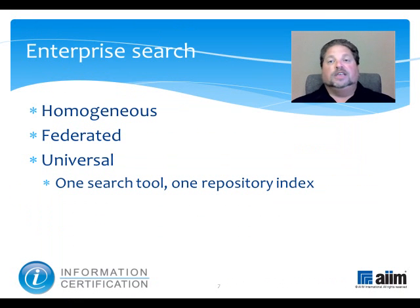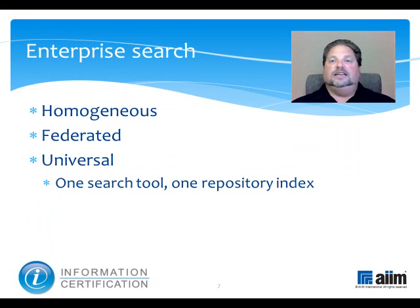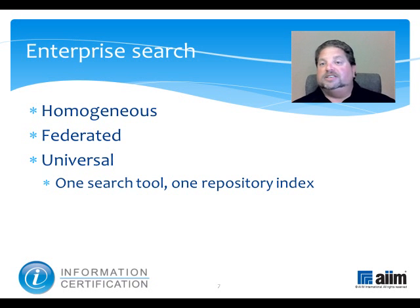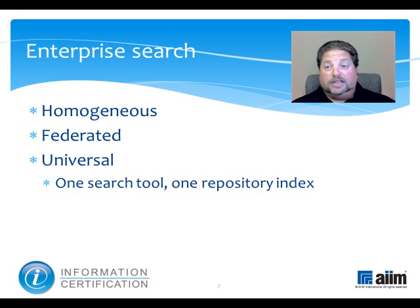Universal Search uses a single search tool to create a single index across any and all enterprise repositories, regardless of whether these individual repositories have their own application search. In essence, it disregards any other search tools. Now, in each of the aforementioned cases, it's important to realize that users typically are able to specify how many, or which, repositories they wish their query to be executed against. The default is usually all, but it doesn't have to be that way.